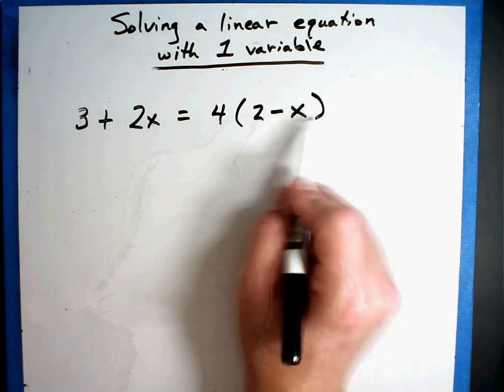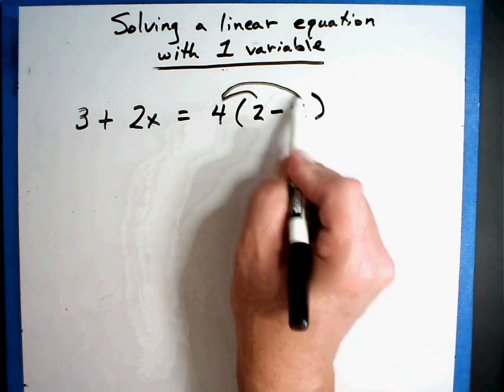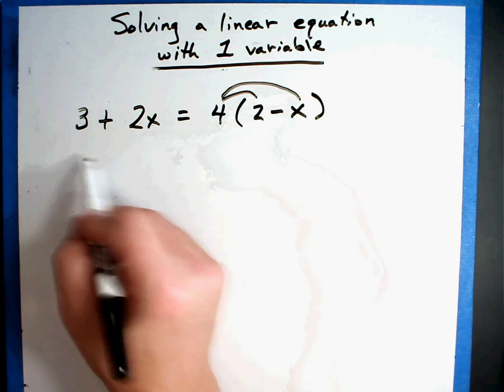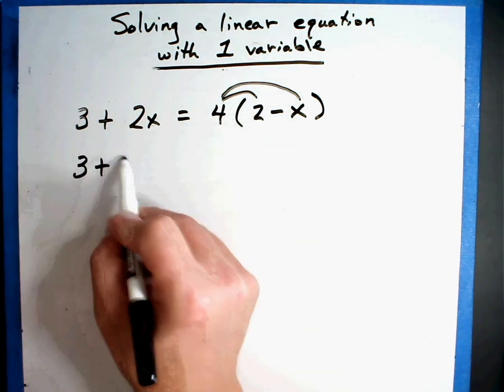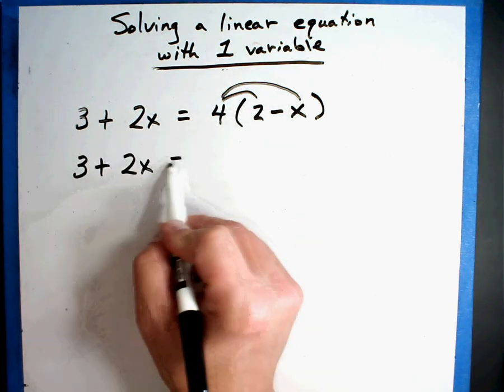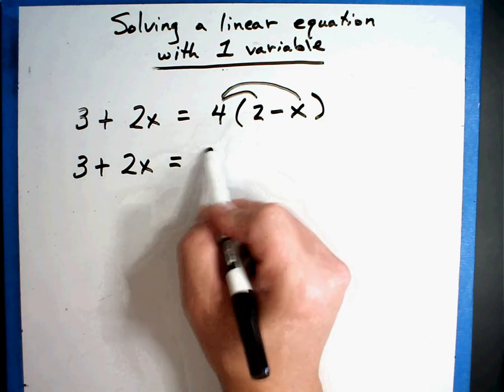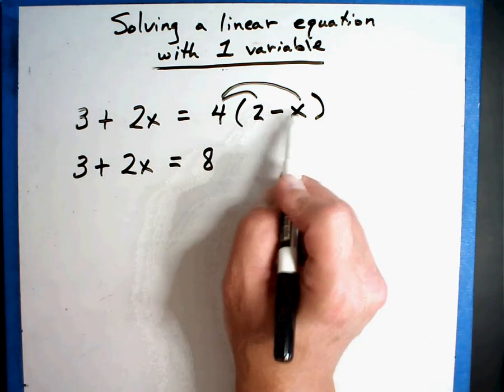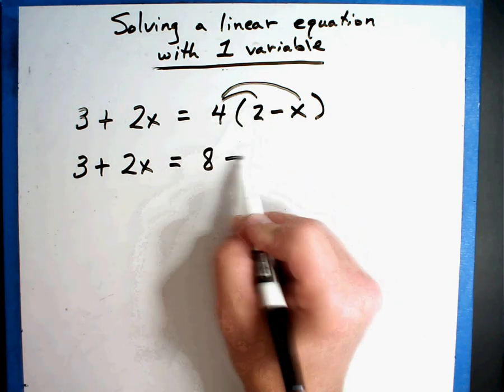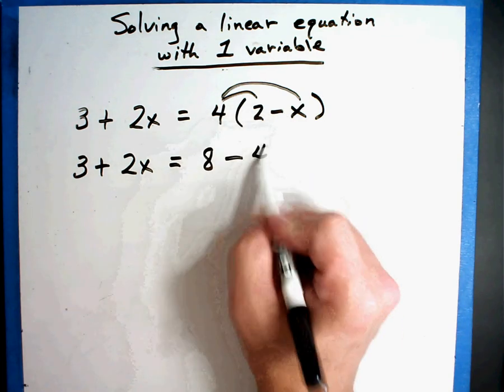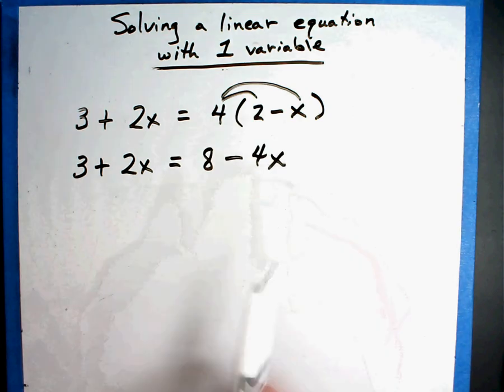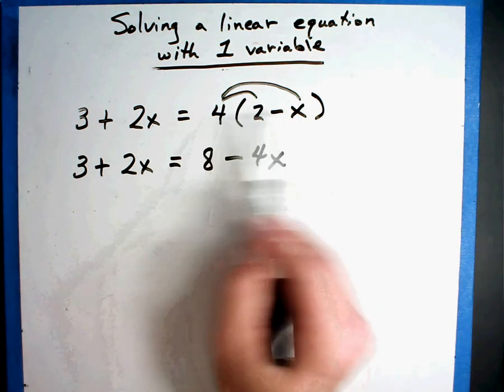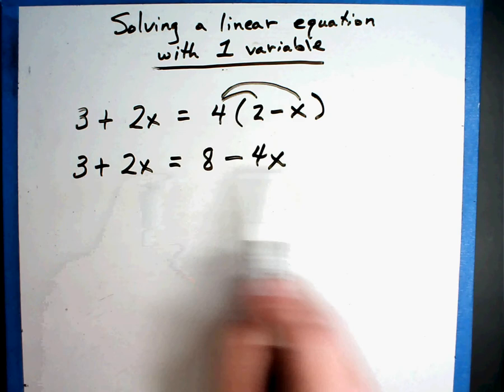So I got to get rid of these. So I have to multiply the 4 times the people inside. So everything's okay on this side, so I'll rewrite it. Equals 4 times 2 is 8. And 4 times negative X, a positive and a negative, if I look at my rules that's a negative. That's negative 4X. Okay so now the parentheses are gone. I multiplied through. There's my equation.